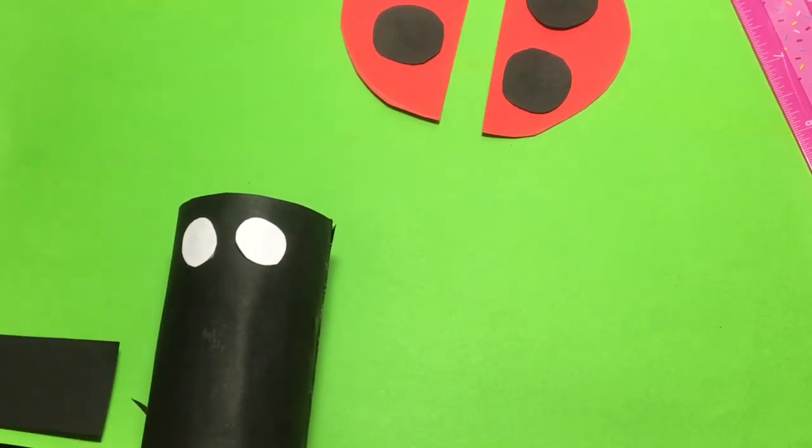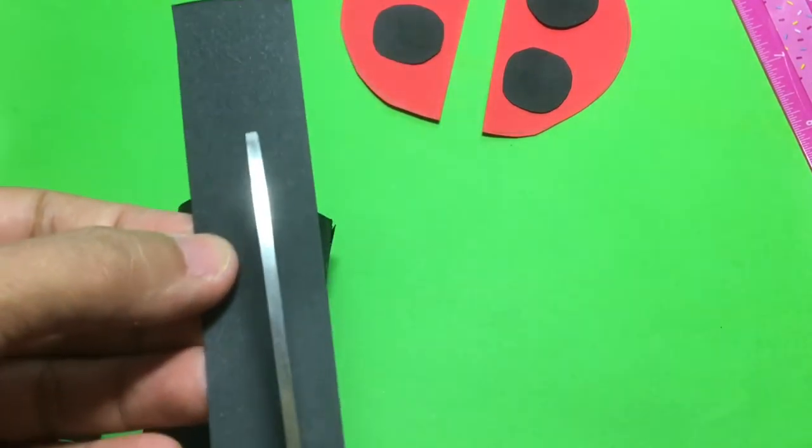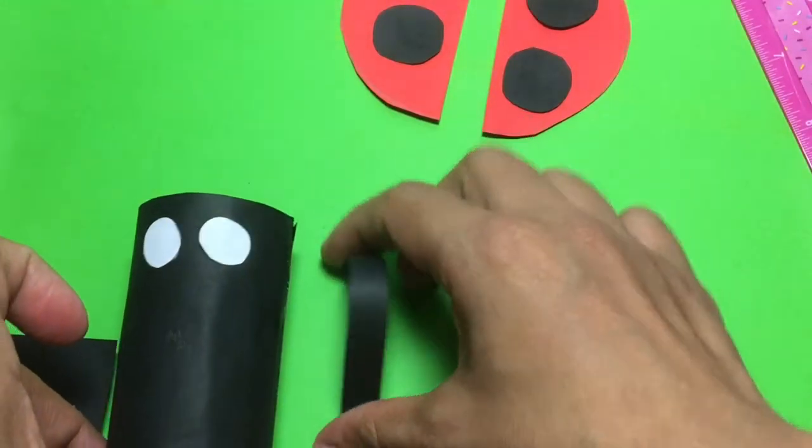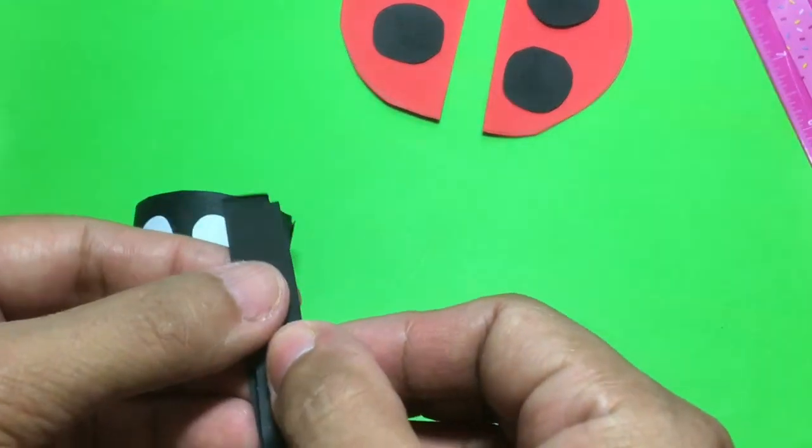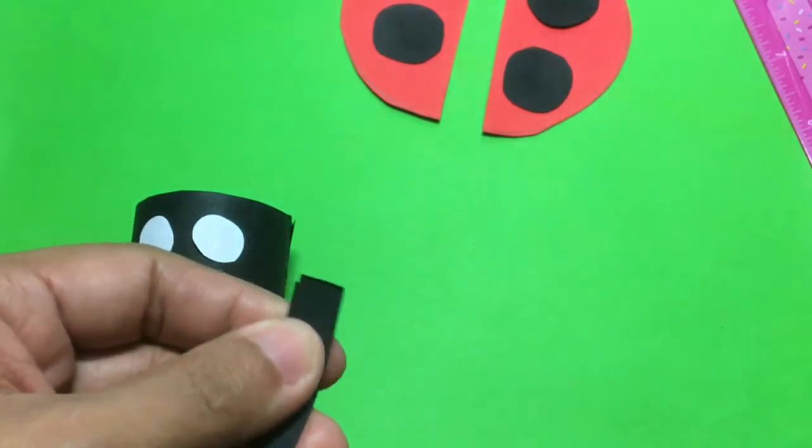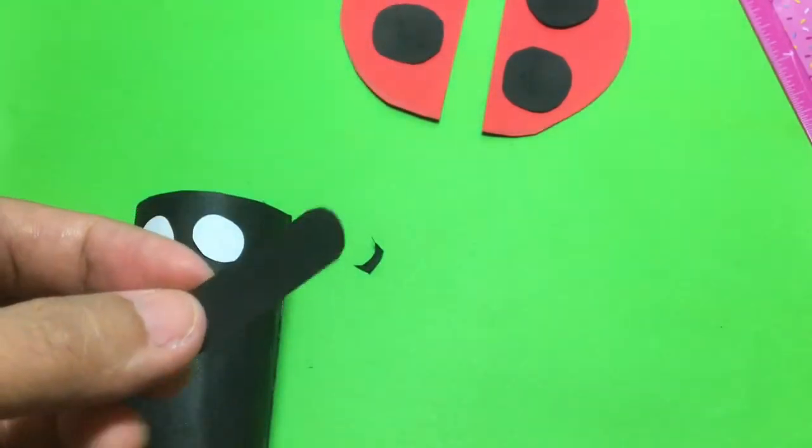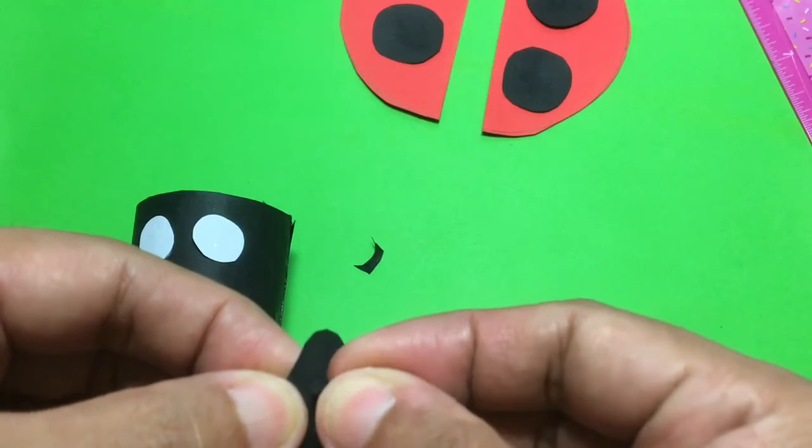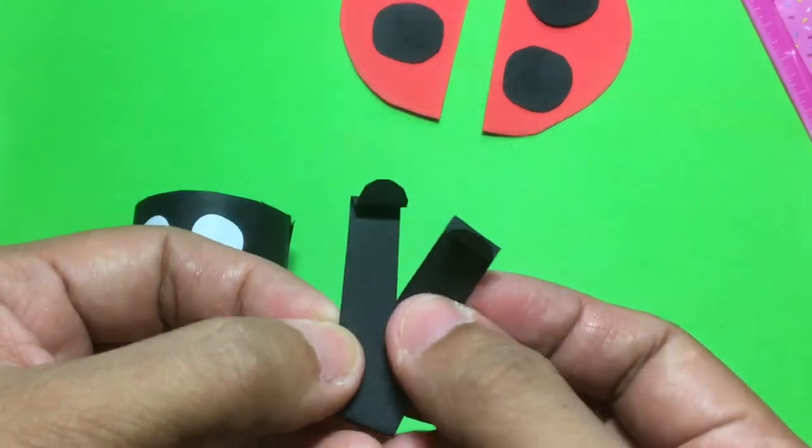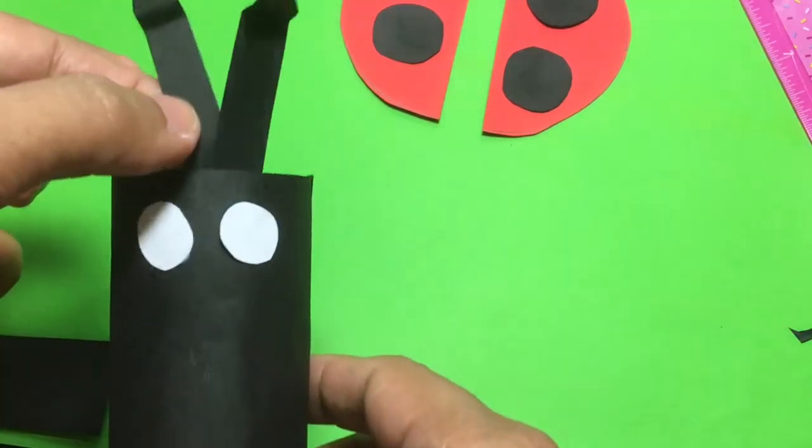For the antennae now, get a strip of paper. Cut it. Fold it in half. Like this. Glue it here.